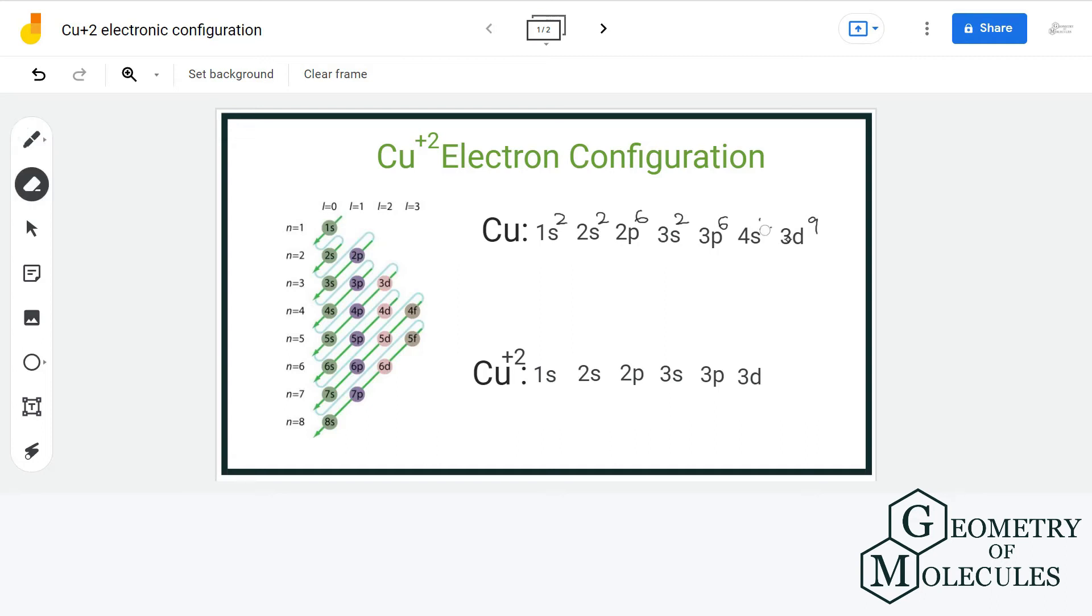So the electronic configuration of copper will be 4s1 and 3d10. This +2 charge represents the loss of two electrons. So we will remove two electrons, one from 4s and one from 3d.